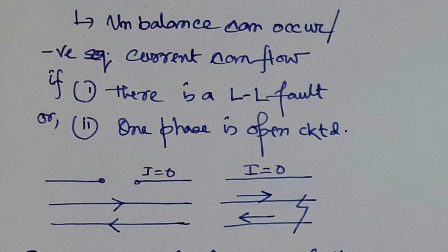Here you can see that if one phase is open-circuited, or if there is a line-to-line fault between the other two phases, in both cases the current in the third phase is zero and current flows through one phase returning via another phase. These are the two conditions under which negative sequence current can flow.